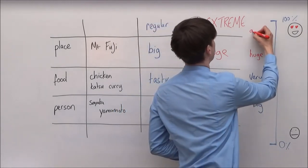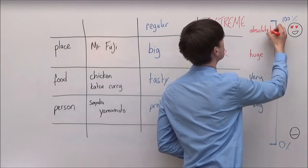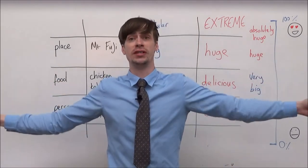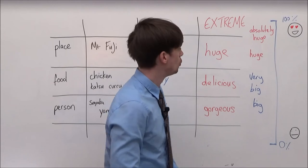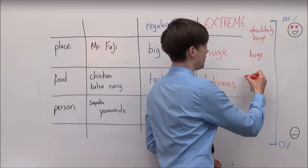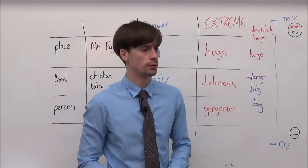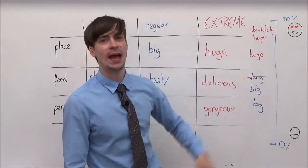So with our extreme adjectives, we don't use very. We would use absolutely. Big, very big, huge, absolutely huge.